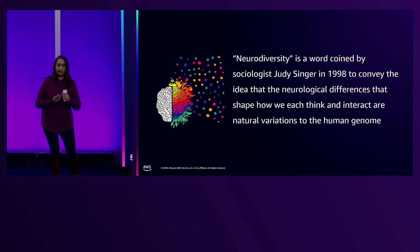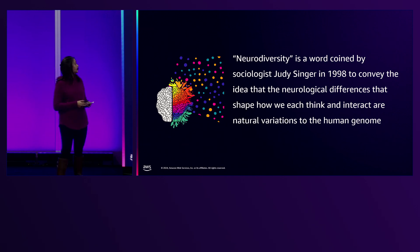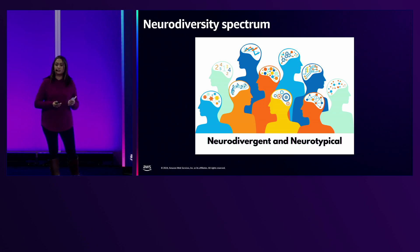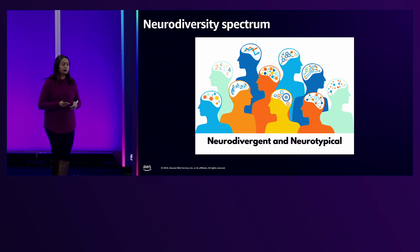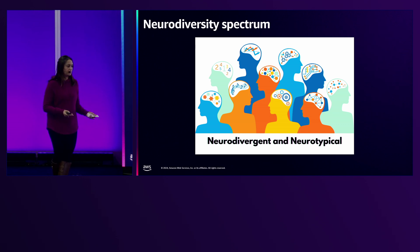It is not something atypical — it's a natural variation. The neurodiversity spectrum refers to the neurominority, which is 20% of the world. Also referred to as neurodivergence or neurodiversity.